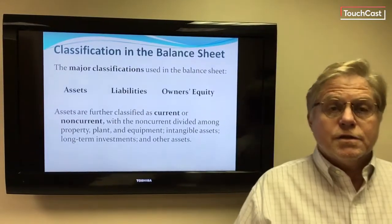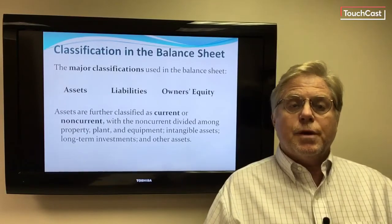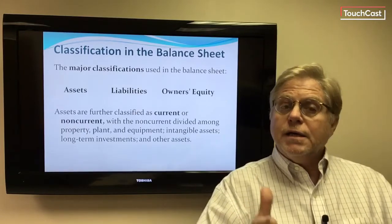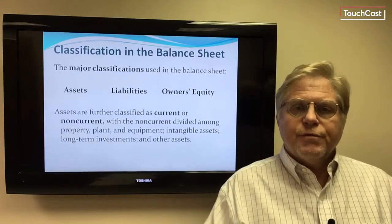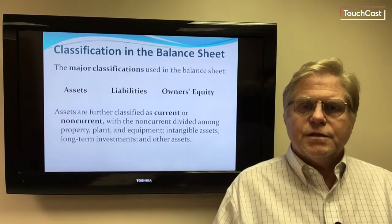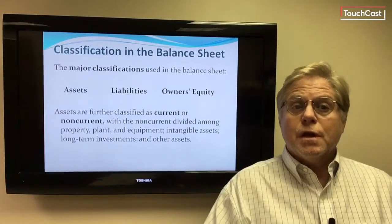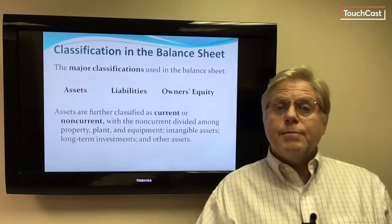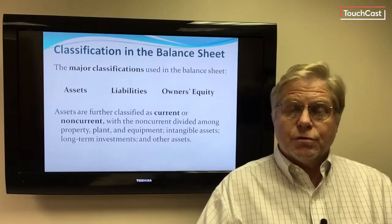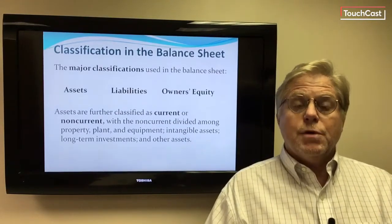Now let's look at the classifications within the balance sheet. The major breakdown or classifications in the balance sheet are between the financial statement elements: assets on one side, and liabilities and equity on the other. From a simple perspective, we can understand assets as anything of value that the company owns. Liabilities represent claims on those assets held by creditors — those who are lenders of resources to the business. And owner's equity represents that residual claim that owners hold.